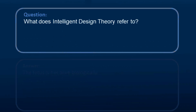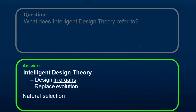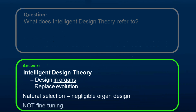Question: What does intelligent design theory refer to? Intelligent design theory refers to the argument from design in organs and seeks to replace the evolutionary mechanisms. When Charles Darwin formulated his theory of evolution by natural selection, the argument from design in organs became negligible. Intelligent design theory does not include fine-tuning, the information in DNA, or the cosmological argument.